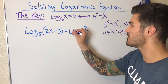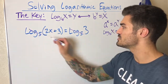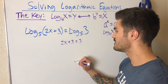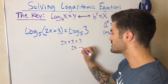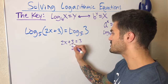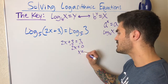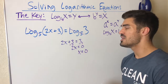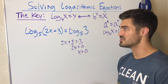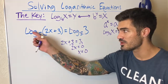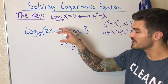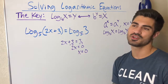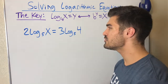This saves a lot of time. We can just say 2x + 3 = 3. Subtracting three from both sides gives 2x = 0, so x equals zero. This is a useful shortcut: if you have the same base on both sides — log base b of stuff equals log base b of stuff — just set the stuff equal to each other.